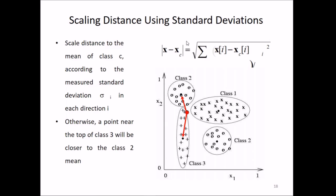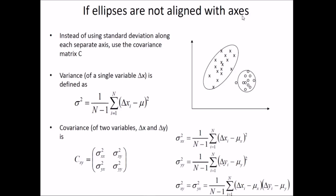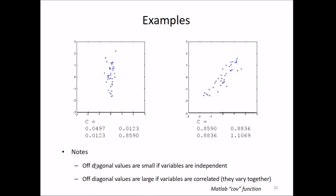If ellipses are not aligned with the axis, this may be a problem. Instead of using standard deviation along each separate axis, we use the covariance matrix C. Variance is defined by this expression, and covariance is given by Cxy. Note that the off-diagonal elements are small if variables are independent, while off-diagonal values are large if variables are correlated, meaning they vary together.